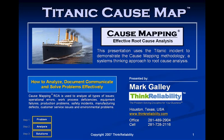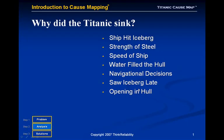I'm going to use the sinking of the Titanic as an example of how a cause map builds. If you ask a group of people why the Titanic sank, it is normal to get different answers. People see problems differently. In the cause mapping method, we visually lay out all the cause and effect relationships of how the issue actually occurred.